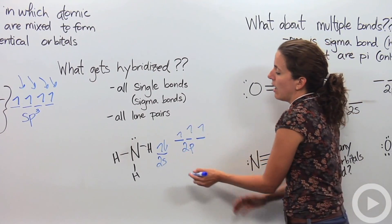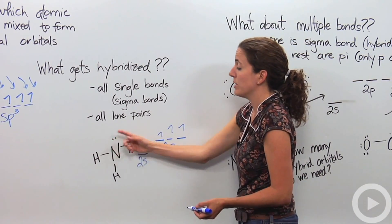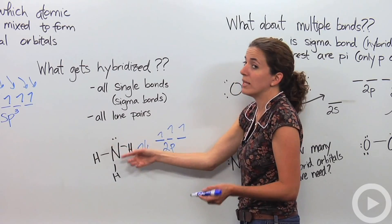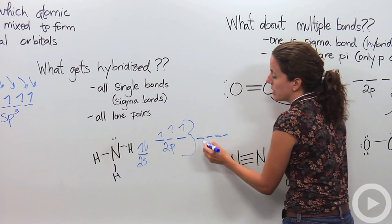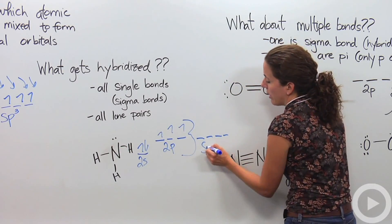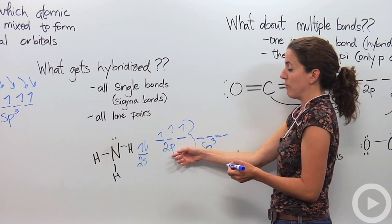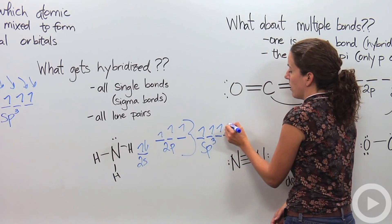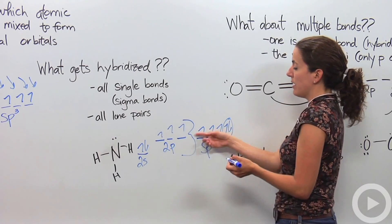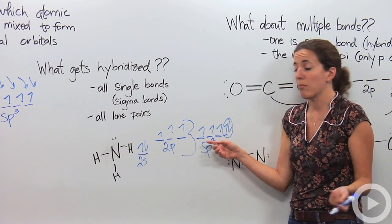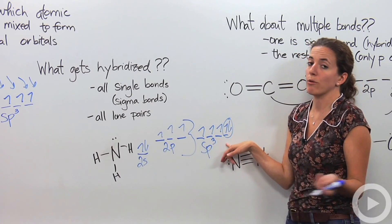We're going to hybridize all of them. We need to have all four orbitals the same — four equal in energy. We're going to call it sp3: one from s, three from p. We have five electrons filling those four sp3 orbitals — here's our lone pair, and here are the hydrogens that come in and bond with them. All equal in energy — these are our new hybrid orbitals.